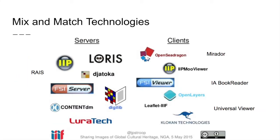IIIF provides the ability to separate image delivery user interfaces from back-end data stores, allowing repositories the ability to update image servers and databases without changing front-end delivery, or vice versa, avoiding the need to re-architect the entire stack. With an active and growing community of organizations developing and supporting IIIF-compatible technologies, a rich ecosystem of interoperable software, including many high-quality open-source options, keeps licensing and operational costs low and predictable over time.